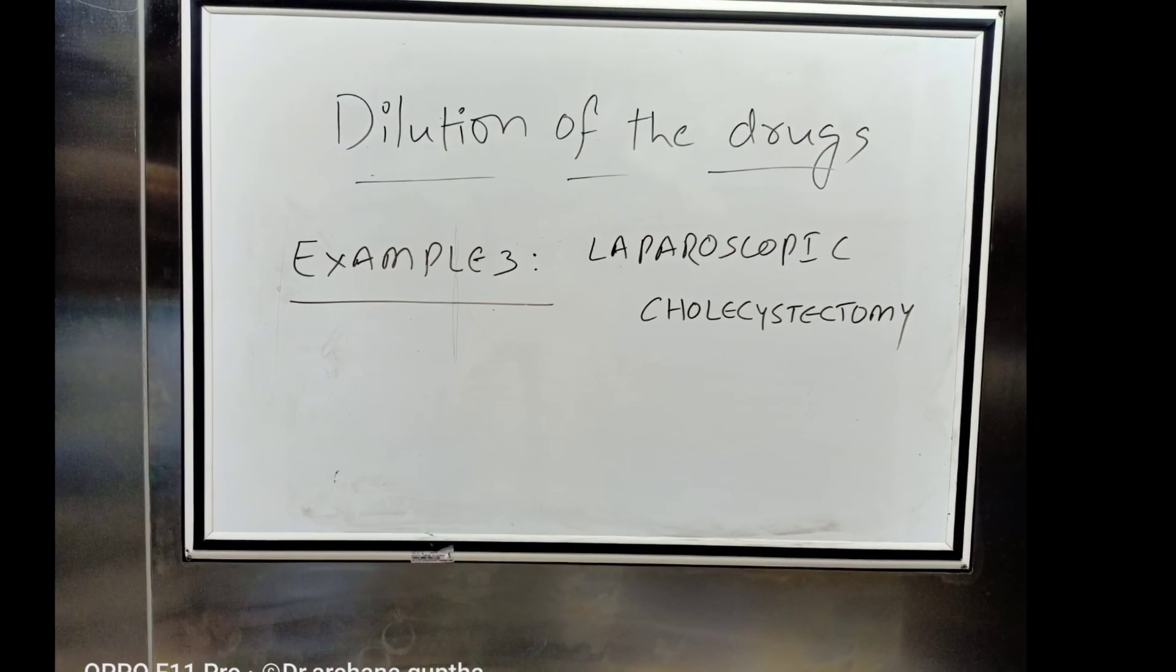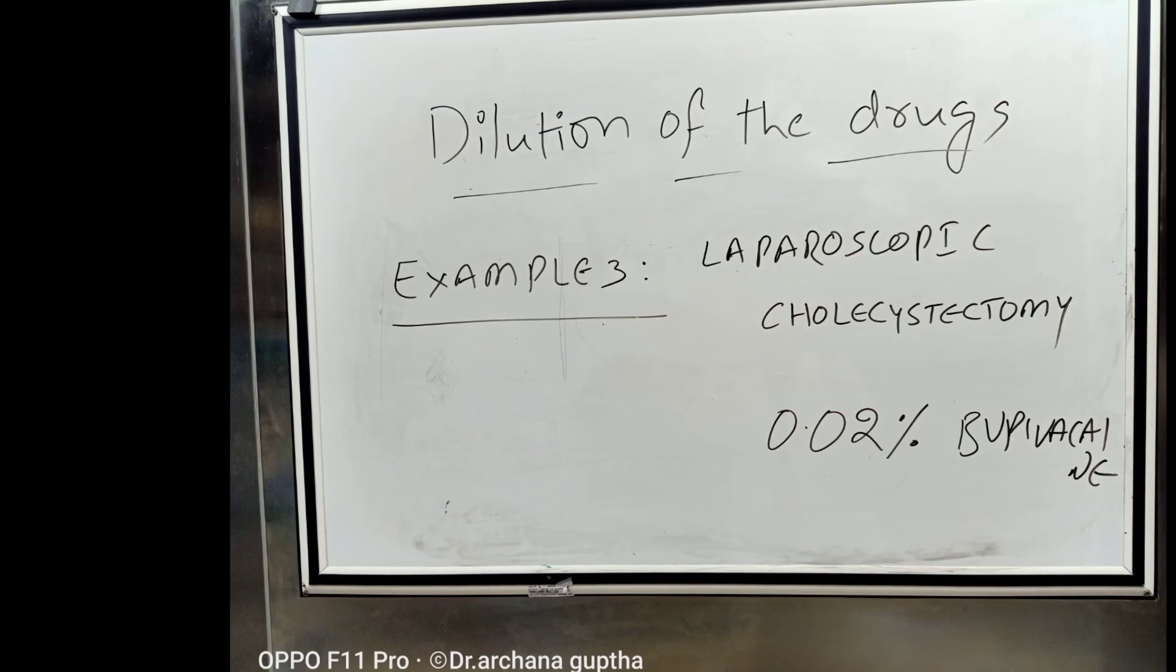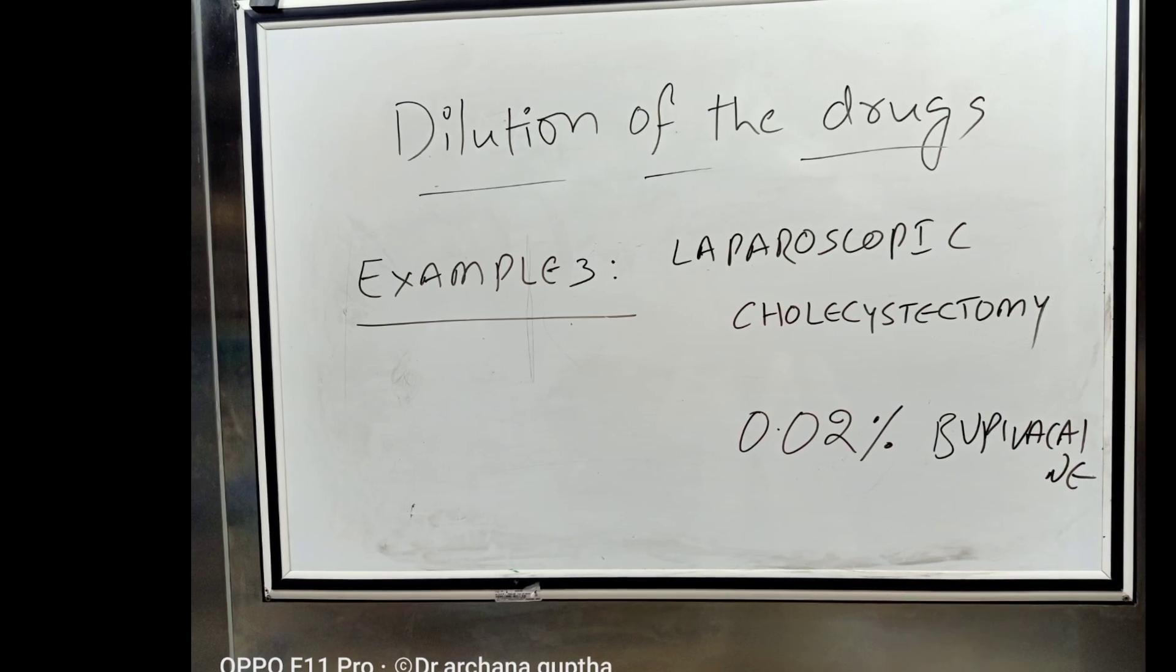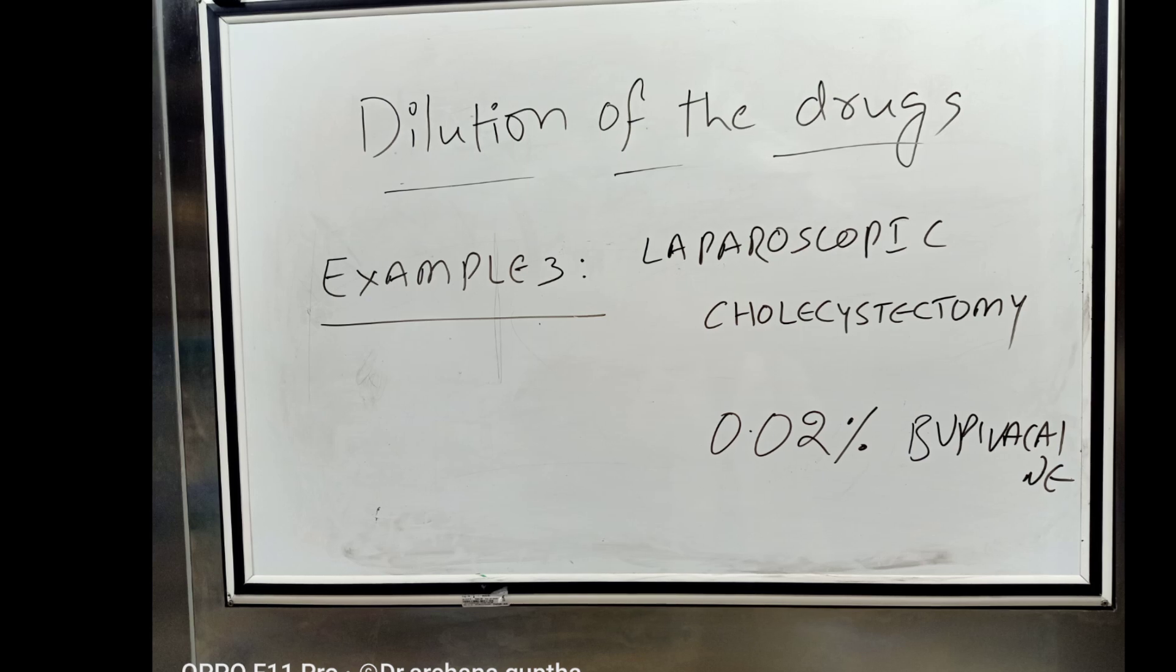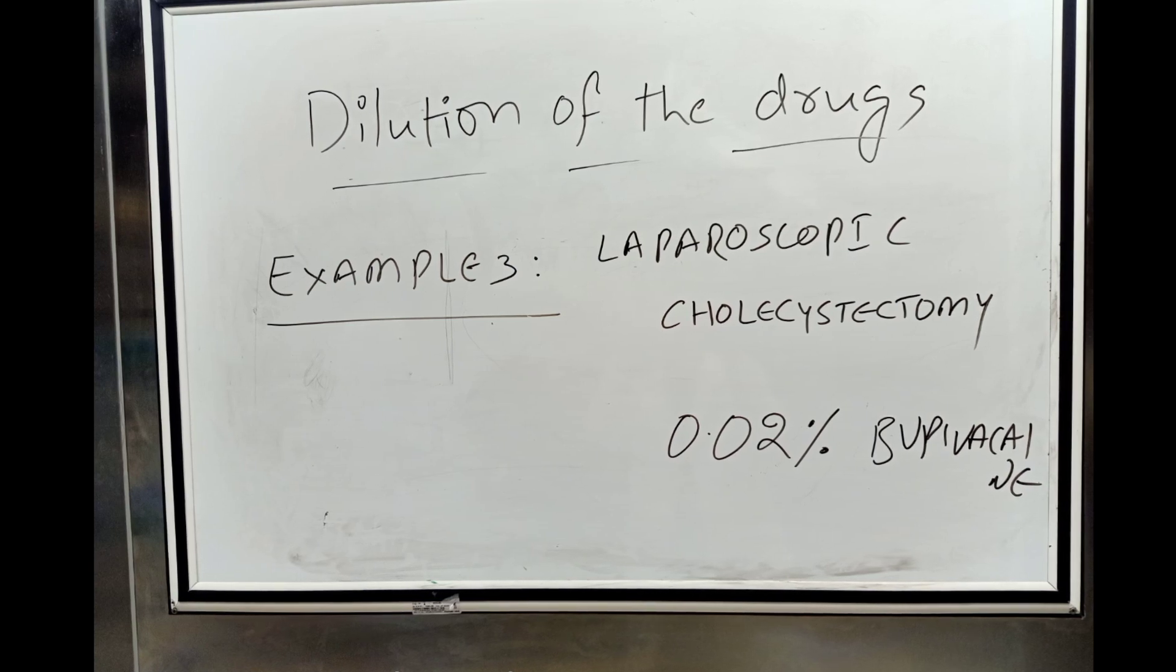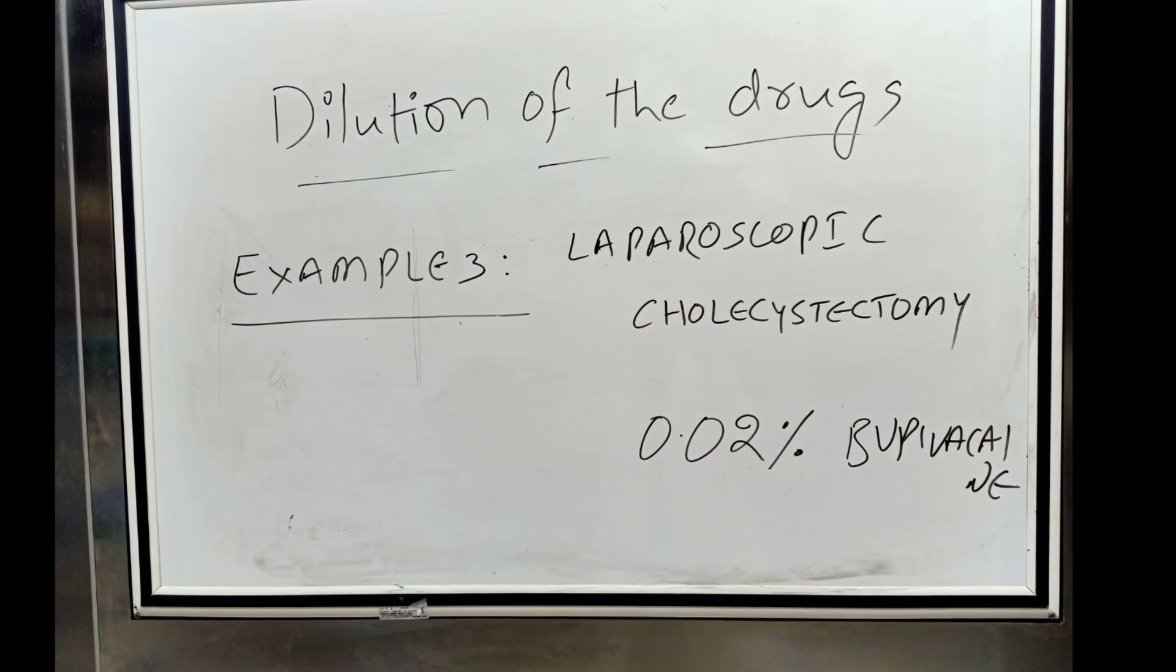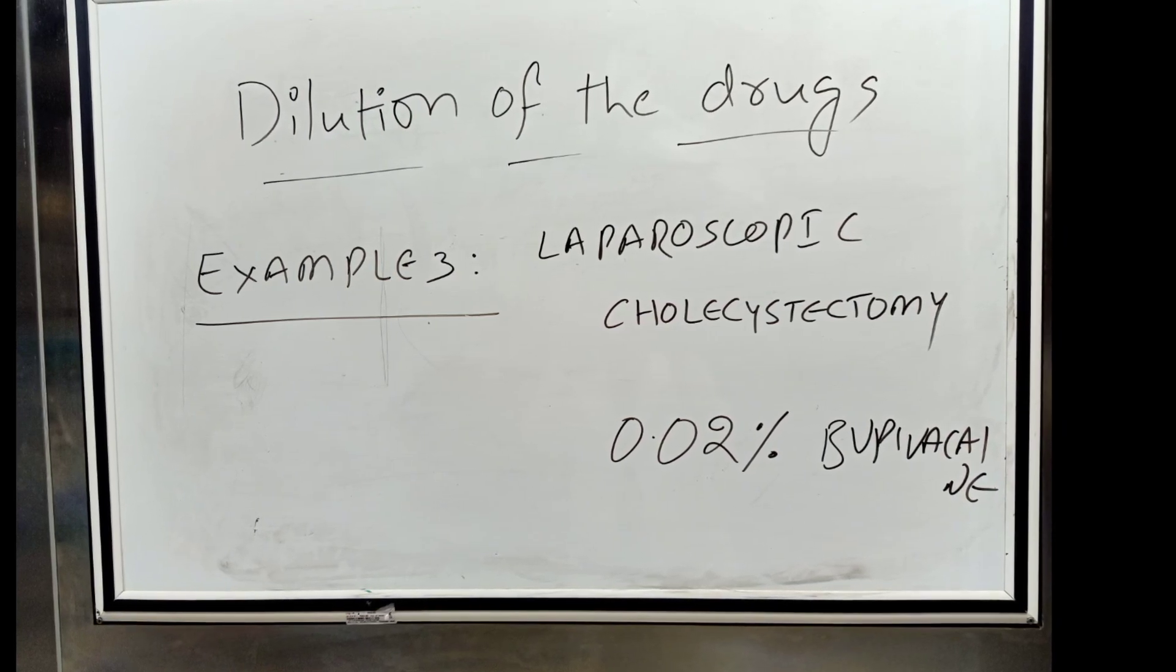Coming to the third example. In our center, during laparoscopic cholecystectomy, after gallbladder extraction, the surgeon is asked to irrigate the surgical bed as well as peritoneal cavity with 500 ml of 0.02% bupivacaine solution. Then, we place the patient in Trendelenburg position with right lateral tilt for 5 minutes to facilitate the effective dispersion of the drug solution in the sub-hepatic region.